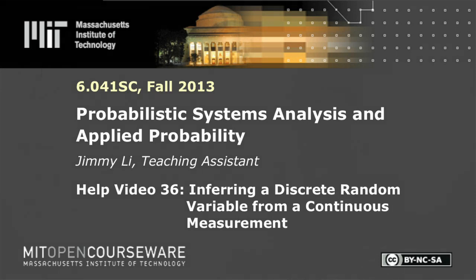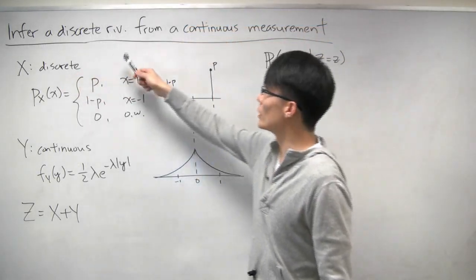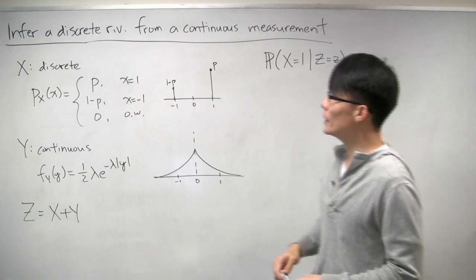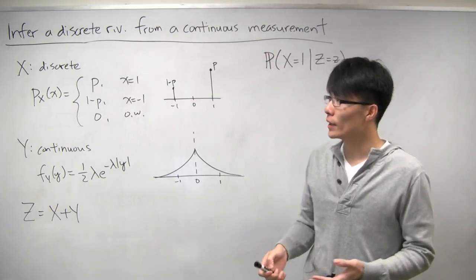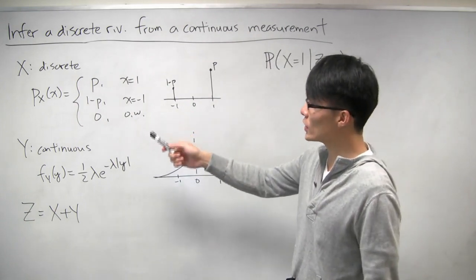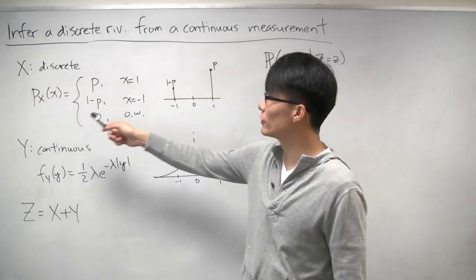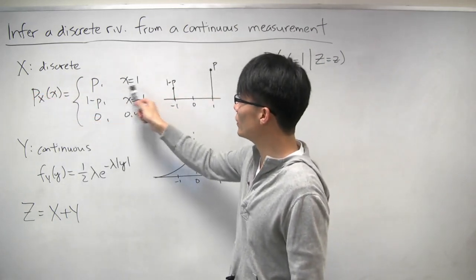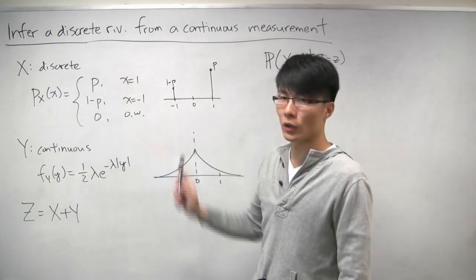In this problem we're going to look at how to infer a discrete random variable from a continuous measurement. This gives us practice working with a variation of Bayes' rule. The problem tells us we have a discrete random variable x with this PMF: it is 1 with probability p, minus 1 with probability 1 minus p, and 0 otherwise.